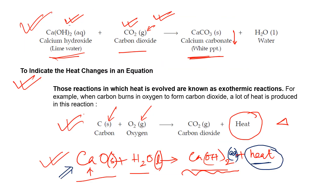In this chemical reaction, calcium hydroxide is reacting with carbon dioxide and we get calcium carbonate, which is a white color precipitate, plus some water. Calcium hydroxide is in aqueous form — also known as lime water or slaked lime. It reacts with carbon dioxide in gaseous form. We obtain calcium carbonate, which is solid, plus water in liquid form.